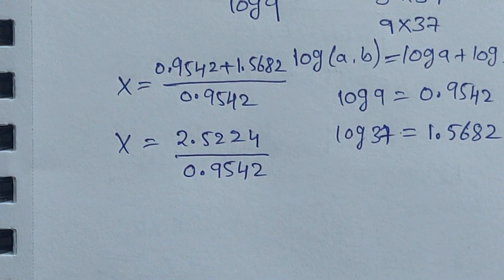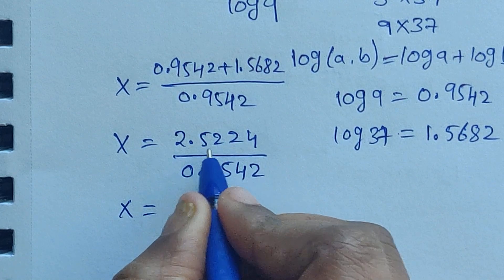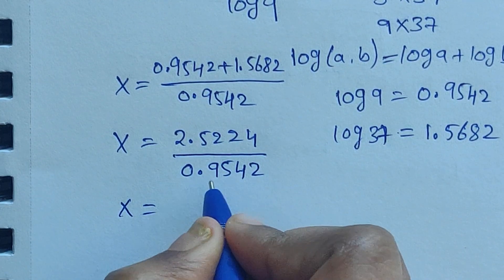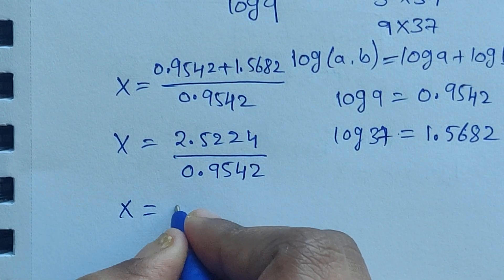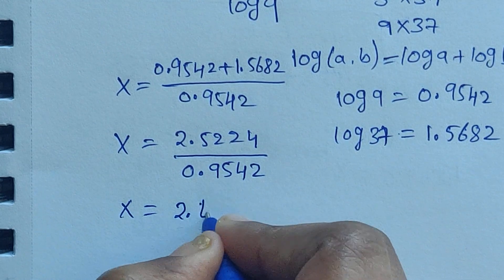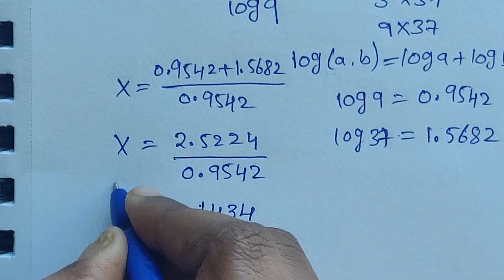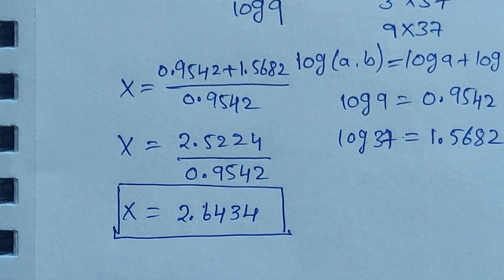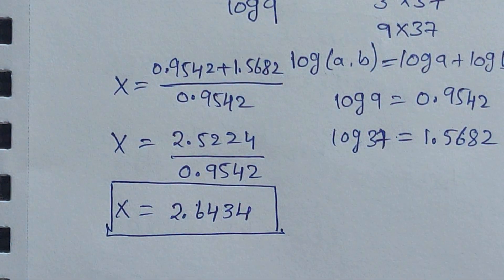So x equals 0.9542 plus 1.5682, which equals 2.5224, divided by 0.9542 in the denominator. This gives x equals 2.6434. So this is the value of x.